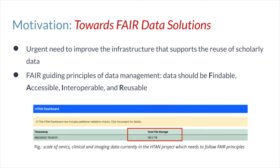As one example, the Human Tumor Atlas Network or HTAN initiative currently has approximately 130 terabytes and counting of omic, clinical and imaging data. An important aspect that is vital to making omics data reusable is retaining the full experimental details used to generate the data, which is why metadata in omics is so important.